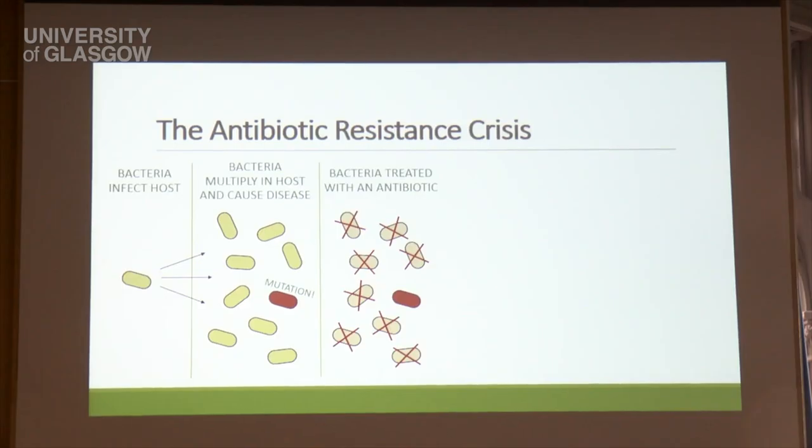While these mutations tend to be random, it's possible that mutations in a small number of the bacteria will allow them to resist the effects of a particular antibiotic. When the host organism is given an antibiotic to treat their infection, the bacteria without the mutation die, whereas the bacteria that do have the mutation are able to ignore the effects of the antibiotic and survive.